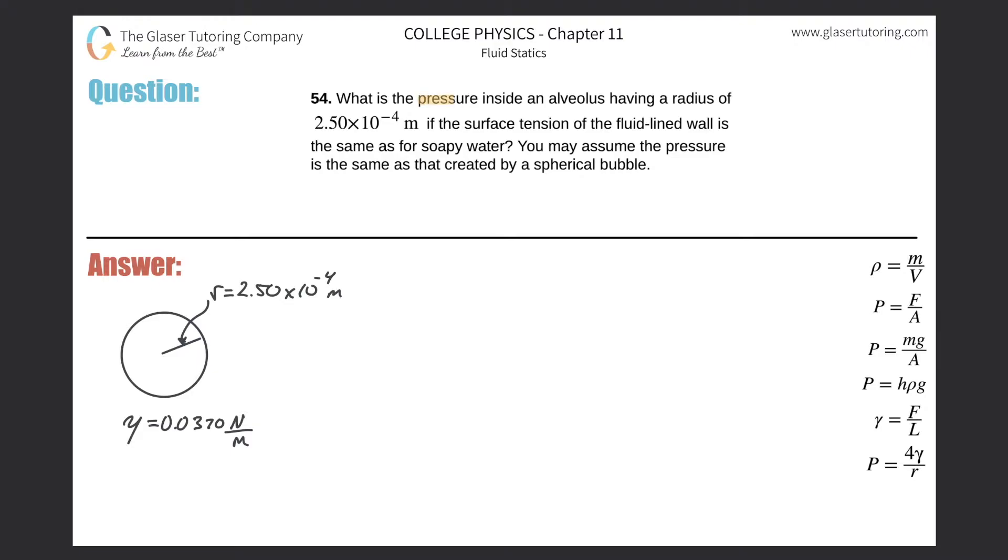Number 54, what is the pressure inside a naviolus having a radius of 2.5 times 10 to the minus 4 meter? If the surface tension of the fluid line wall is the same as that for soapy water, you may assume the pressure is the same as that created by a spherical bubble.